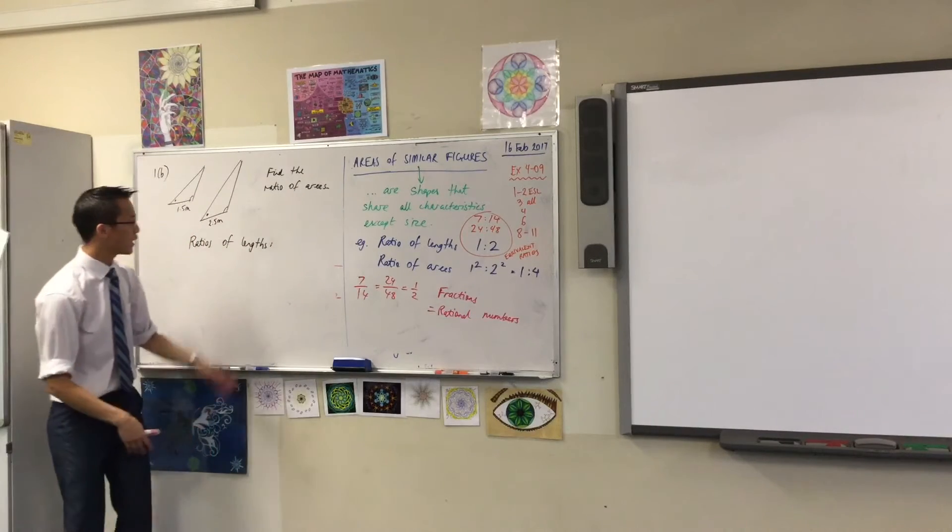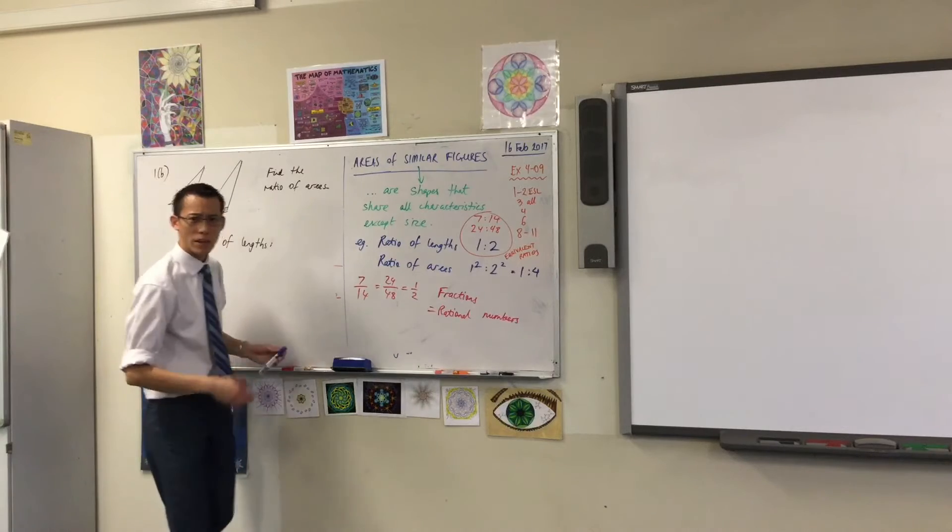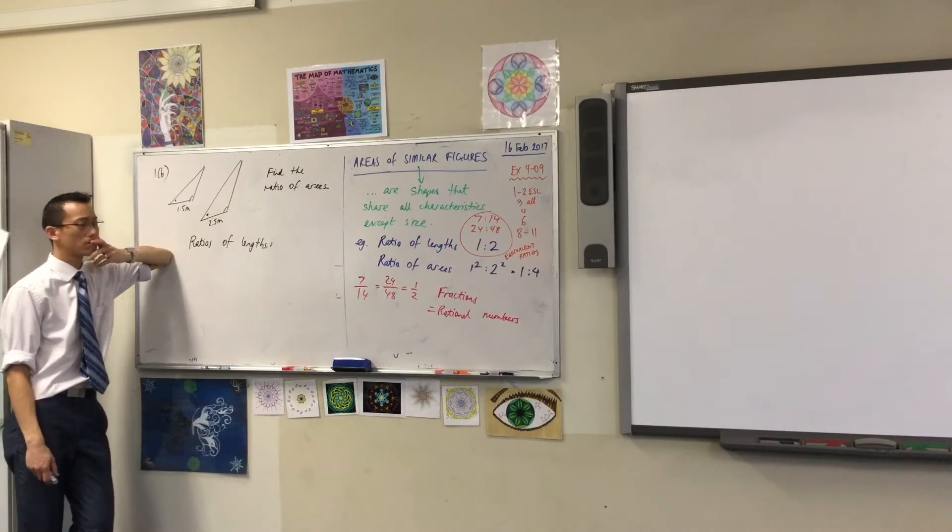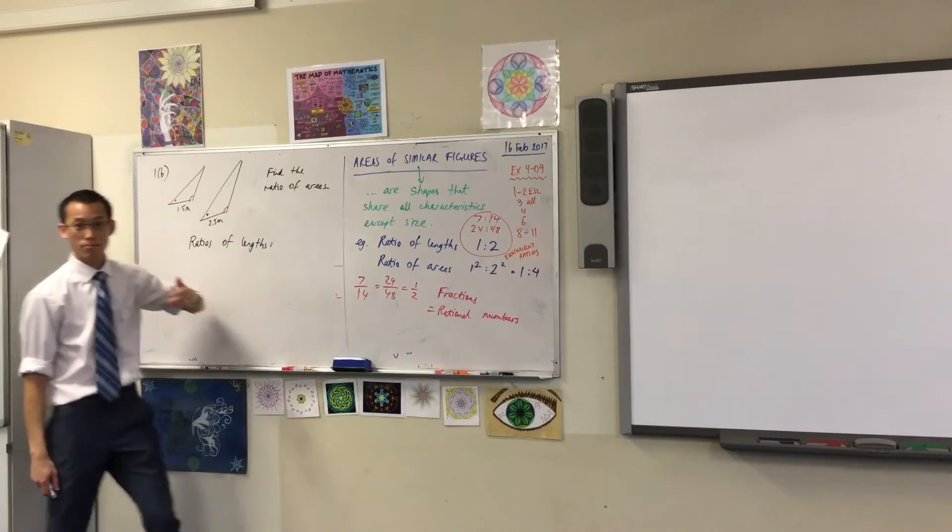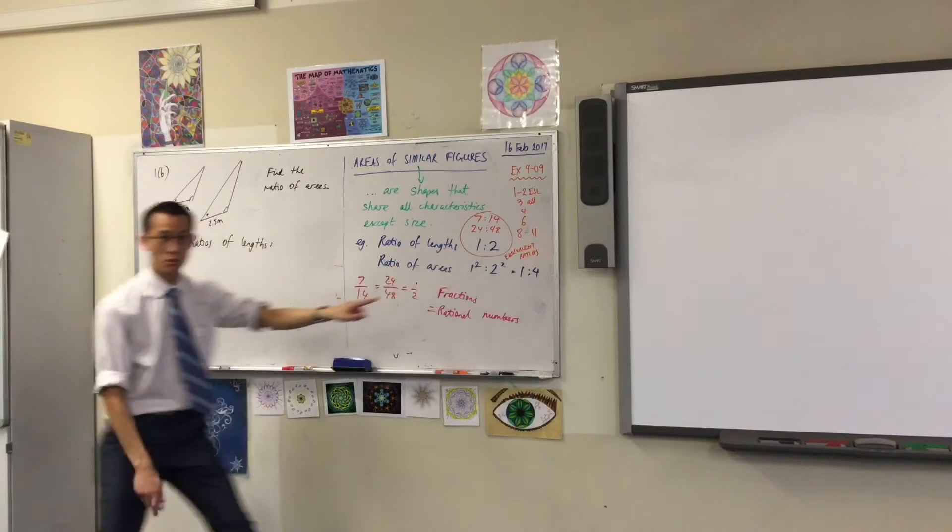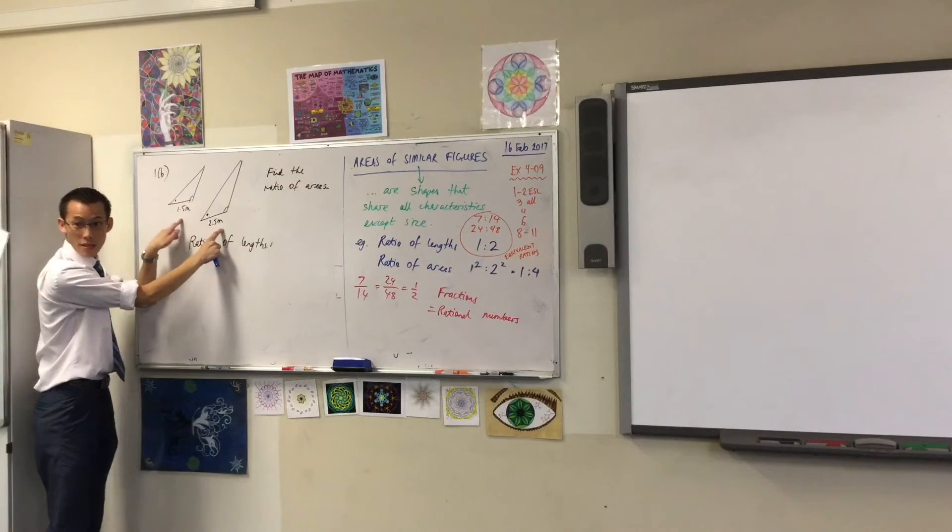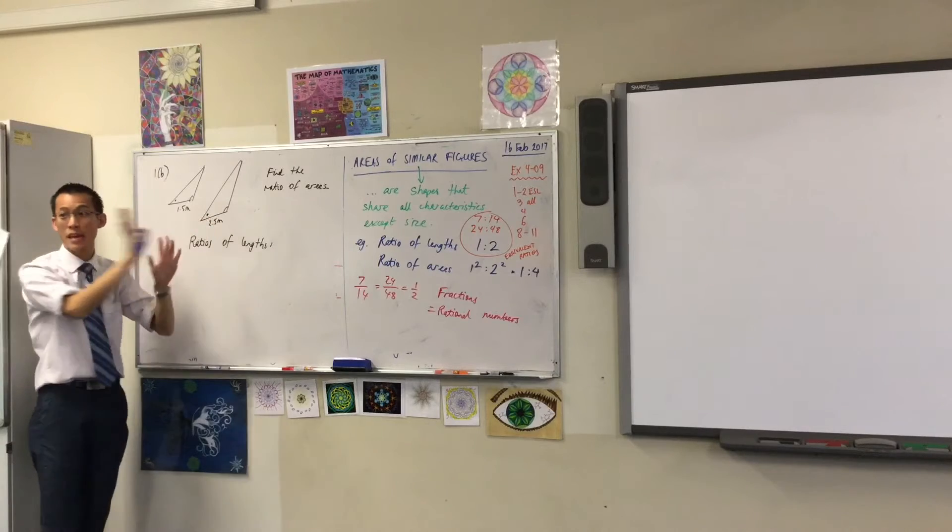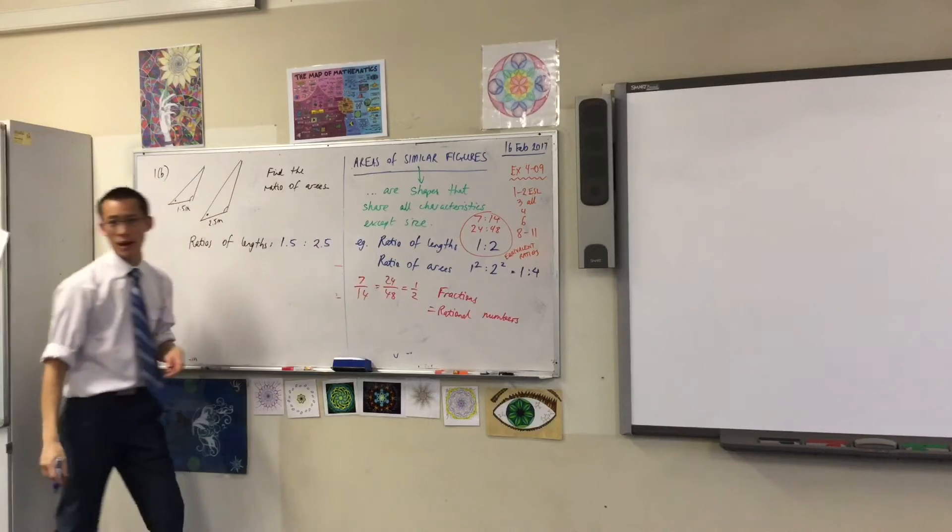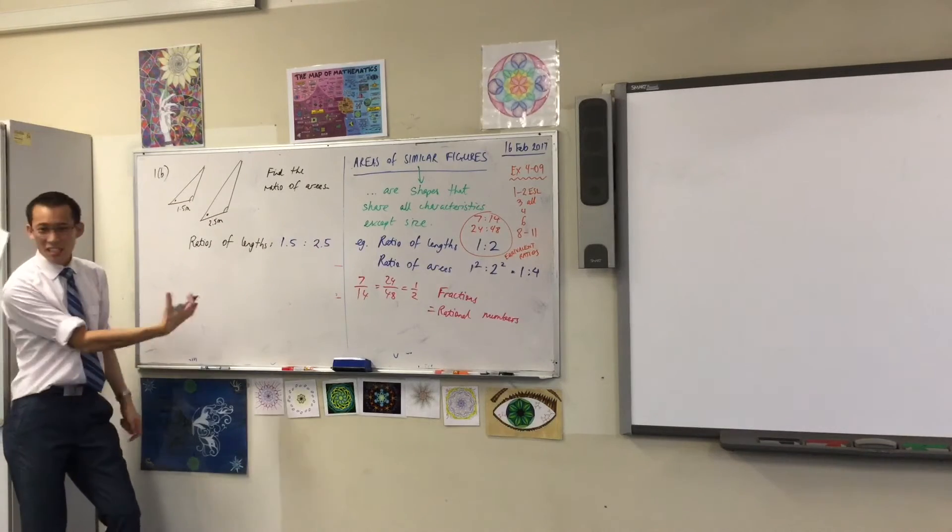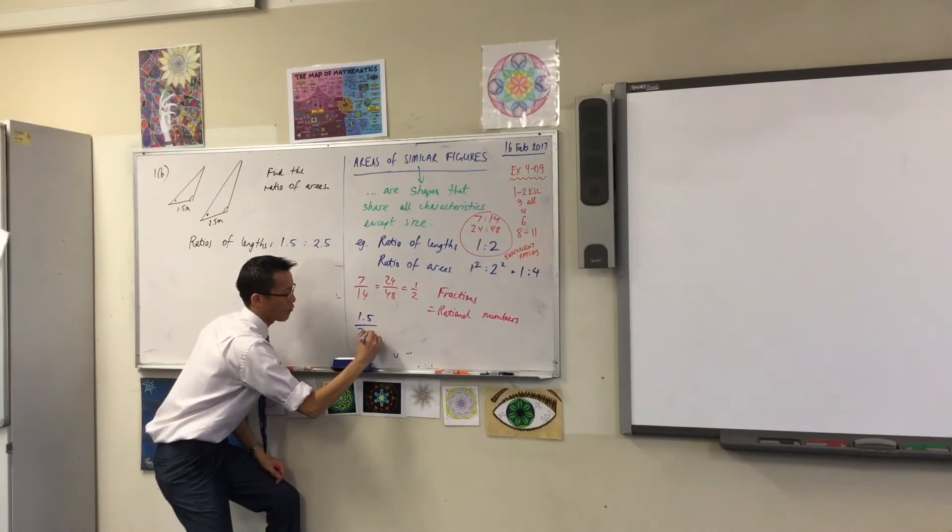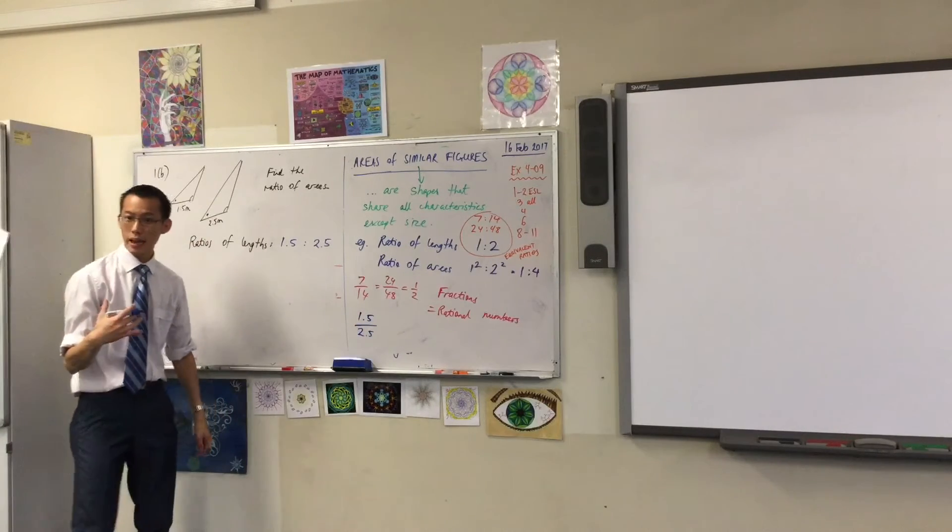So therefore, when I go to write these ratios of lengths, what are the ratios of lengths in this question? 7 to 14, 24 to 48, 1 to 2, it's just this to this. Do you agree with that? I'm just going to write them as is without changing them. 1.5 to 2.5. Okay? But that's a bit awkward. Just like we're trying to avoid writing decimals and mixing them with fractions, we like to write things in whole numbers.